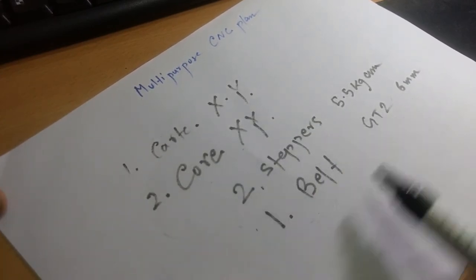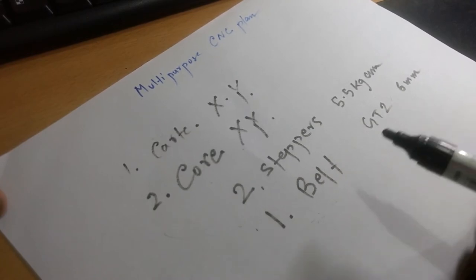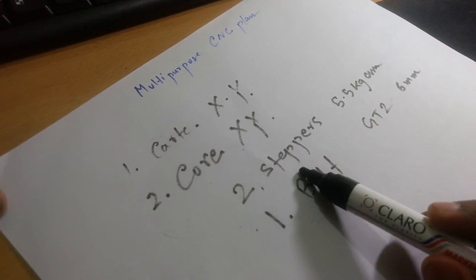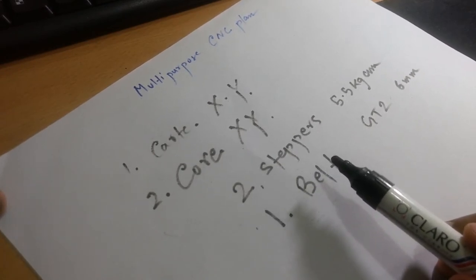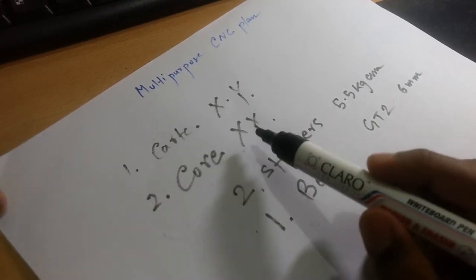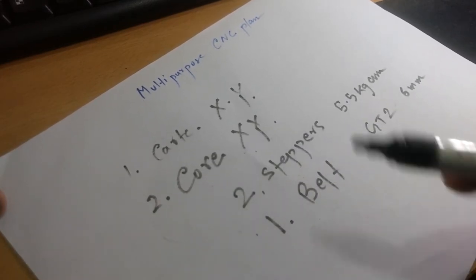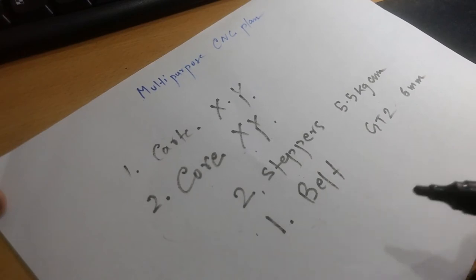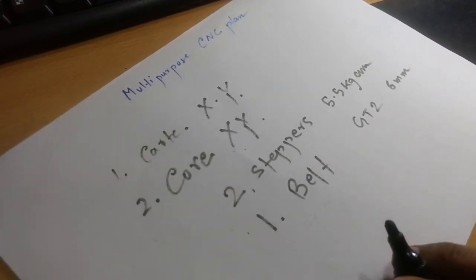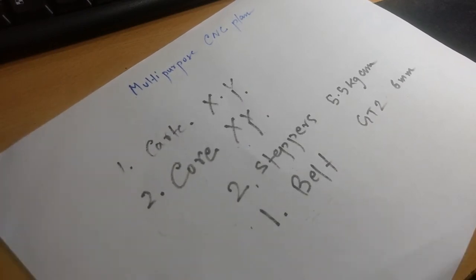So these steppers—both steppers will be there—and both steppers will synchronize their speeds or their rotation in such a way that X and Y axis will move accordingly. Code XY is somewhat better because both the motors will be in the same axis, as I will show you.